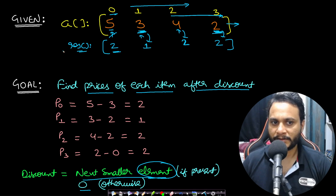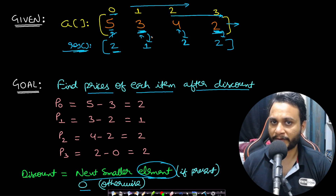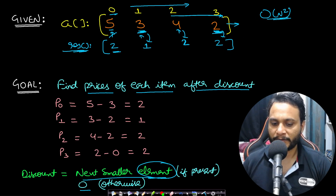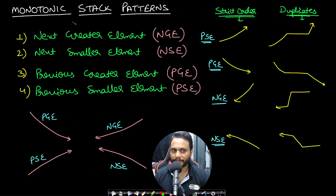So the result array is what we want to find. This problem is entirely about finding the next smaller element for each element in the given array. The simple O(n²) technique will pass given the constraints, but we will look at the optimal solution using a monotonic stack.